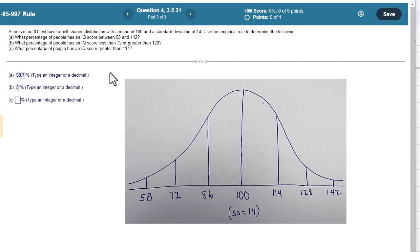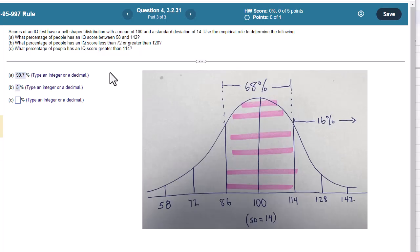32% is for both tails. So if 32% is in both these tails, we just want one of those tails, the above 114. So 32 divided by two is 16%.